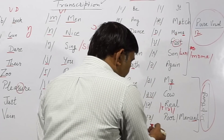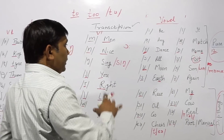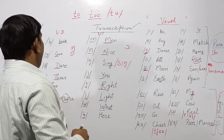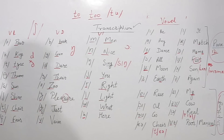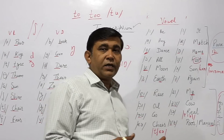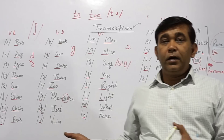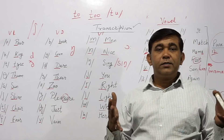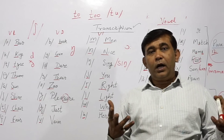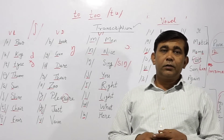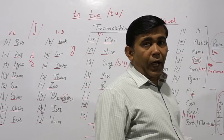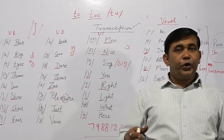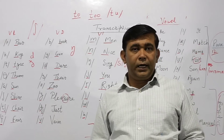So these are all our vowel sounds — all 20 vowel sounds — and these are our consonant sounds. I hope you have understood all these things clearly. If you have any doubt, please write in the comment box and I'll try to answer all your questions. Thank you for watching. If you like it, please share and subscribe.